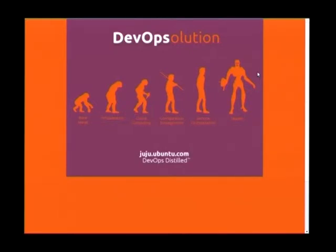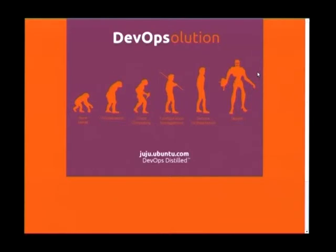We evolved. We decided we have all these computers running — let's make it so we can easily and repeatably set up these environments. Then we have configuration management to add to that, and we have a lot of great tools that do that today. So the next step of the evolution graph is service orchestration.